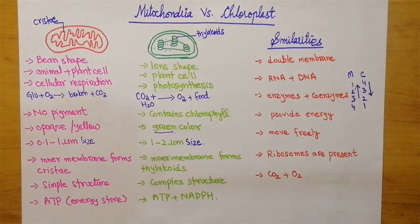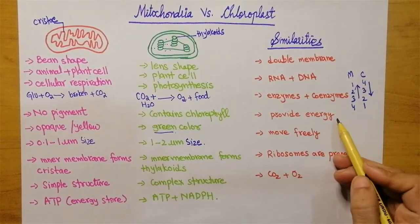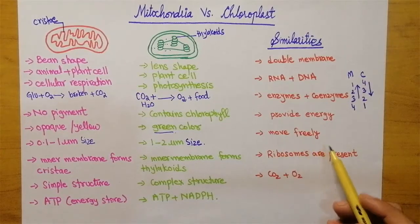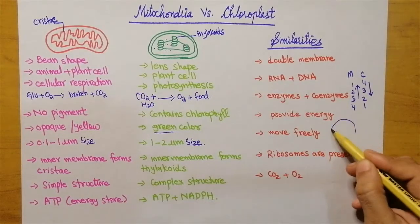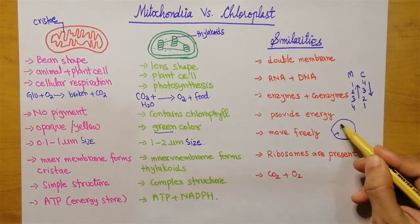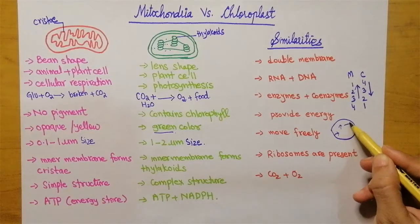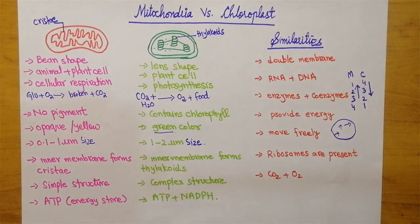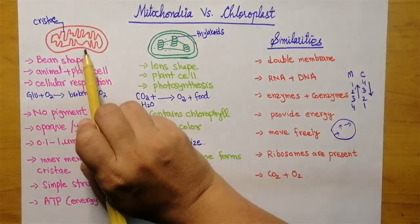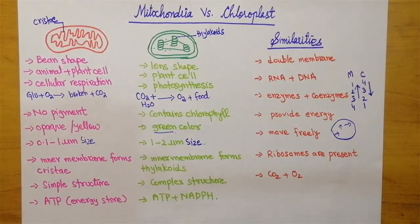They both provide energy. ATP and NADPH are actually energy-storing substances, so they provide energy to living organisms. Along with this, they move freely — they are present inside the cytoplasm and can easily move from one place to another within the cytoplasm. They both contain ribosomes, whether chloroplast or mitochondria.